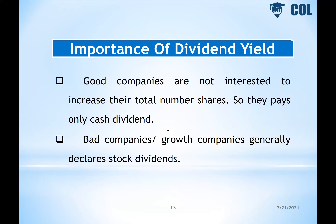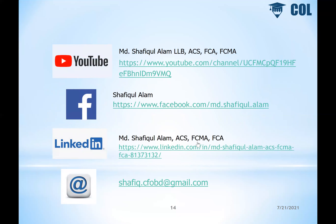Generally, good companies — like well-established MNC companies — pay good cash dividends regularly. Growth companies that are just starting out may not pay much dividend. But good MNC companies tend to pay consistent dividends. I hope this small video presentation was helpful to you.